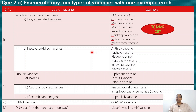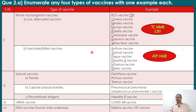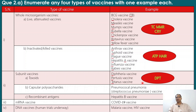The mnemonic for inactivated or killed vaccines is ATP here — anthrax, typhoid, plague — plus hepatitis A, influenza, and rabies. For toxoid vaccines, the common one is DPT — diphtheria, pertussis, tetanus. These mnemonics are also important for MCQs, as questions can test which examples belong to which type of vaccine.